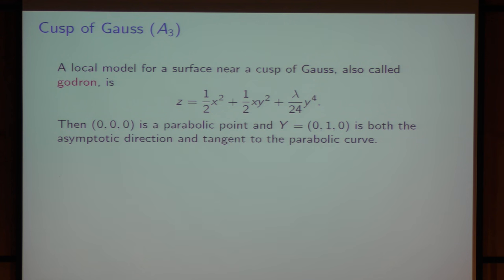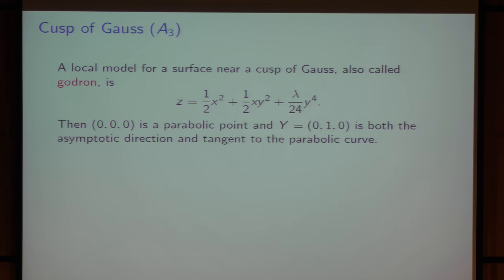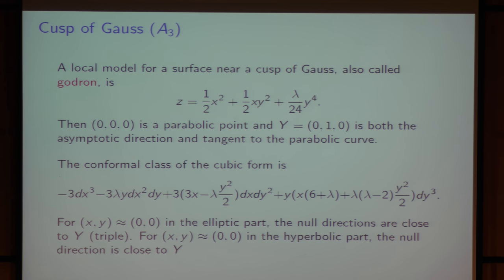At the cusp of Gauss — also called the Godron — we take a specific model. In this case, (0,0) is a parabolic point and (0,1,0) is both the asymptotic direction and tangent to the parabolic curve. The conformal class of the cubic form is obtained by a specific formula. For x, y close to (0,0) in the elliptic part, the null directions are close to y; in the hyperbolic part, the null direction is also close to y.